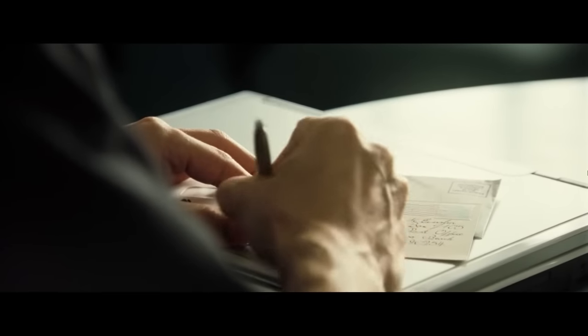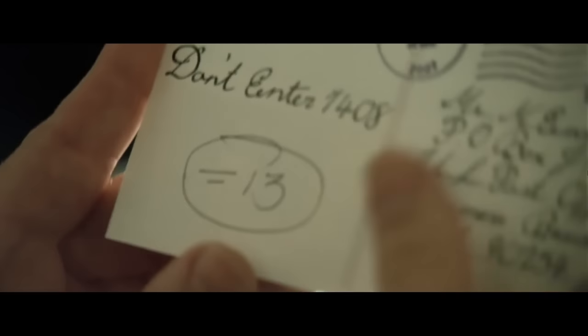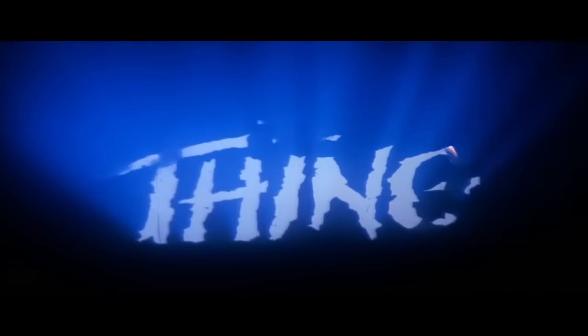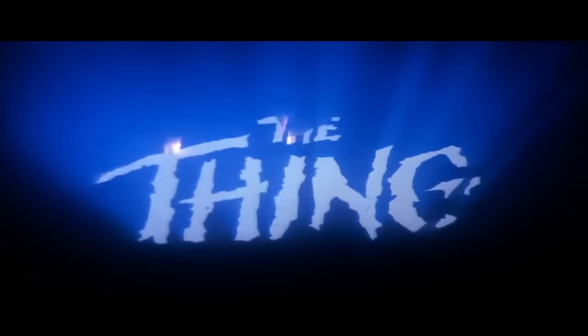The main purpose of a narrative hook is to grab the audience's attention. The first way is by raising questions — putting questions in your audience's head, making them curious about what will happen down the line. This is the best way to get their attention. You want to show the audience something interesting or unusual that spurs their curiosity. A great example comes from the 1982 movie The Thing.